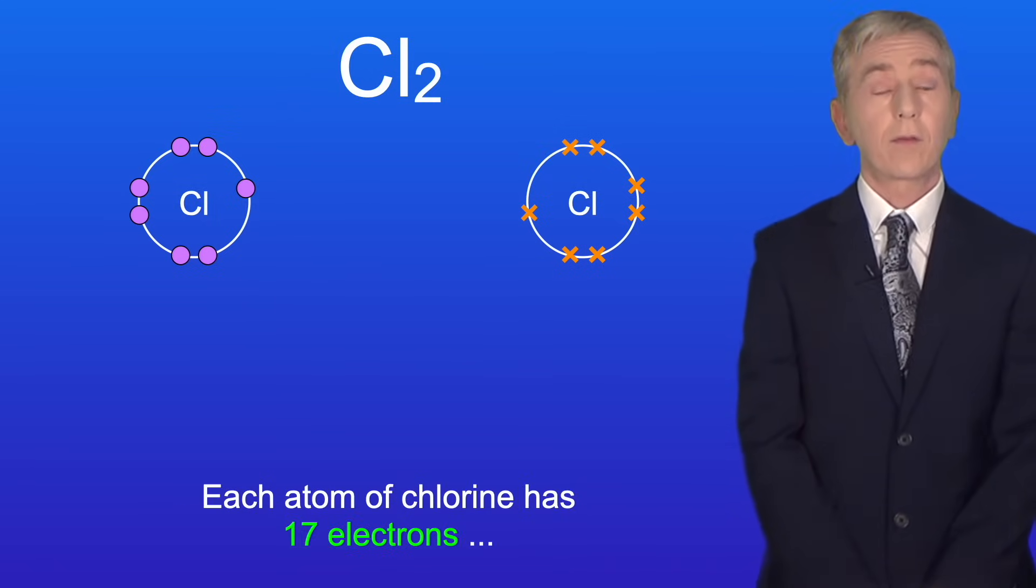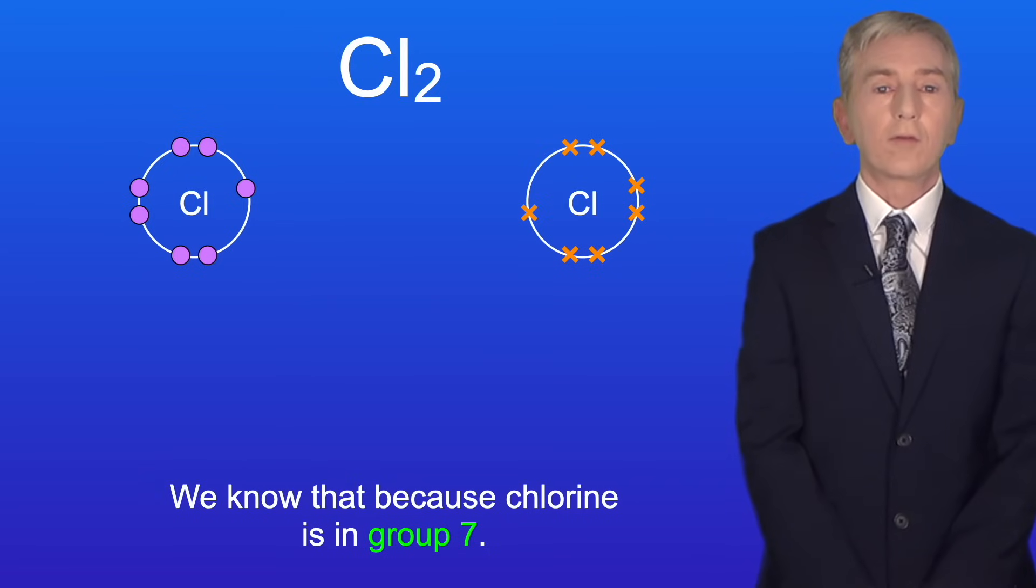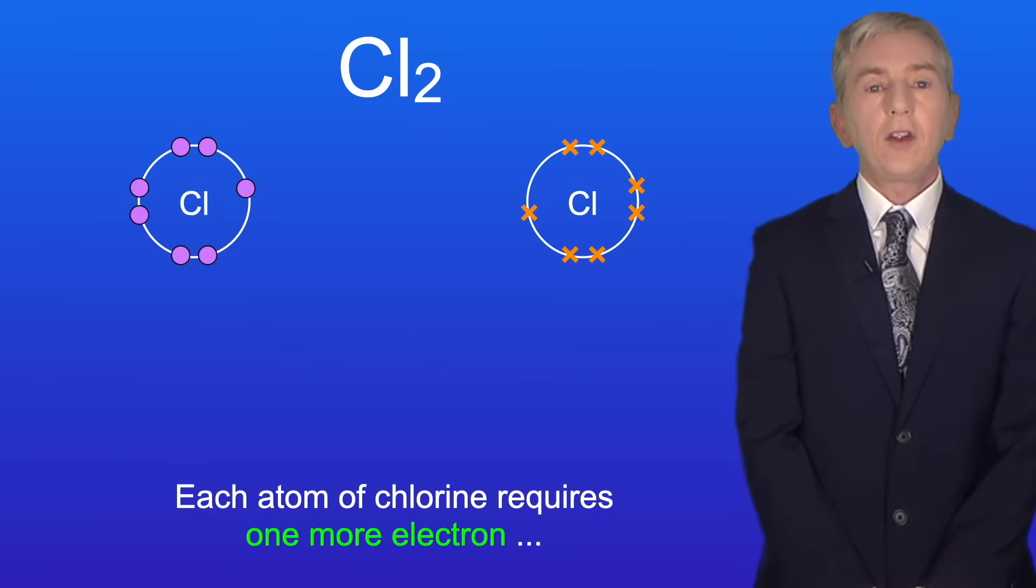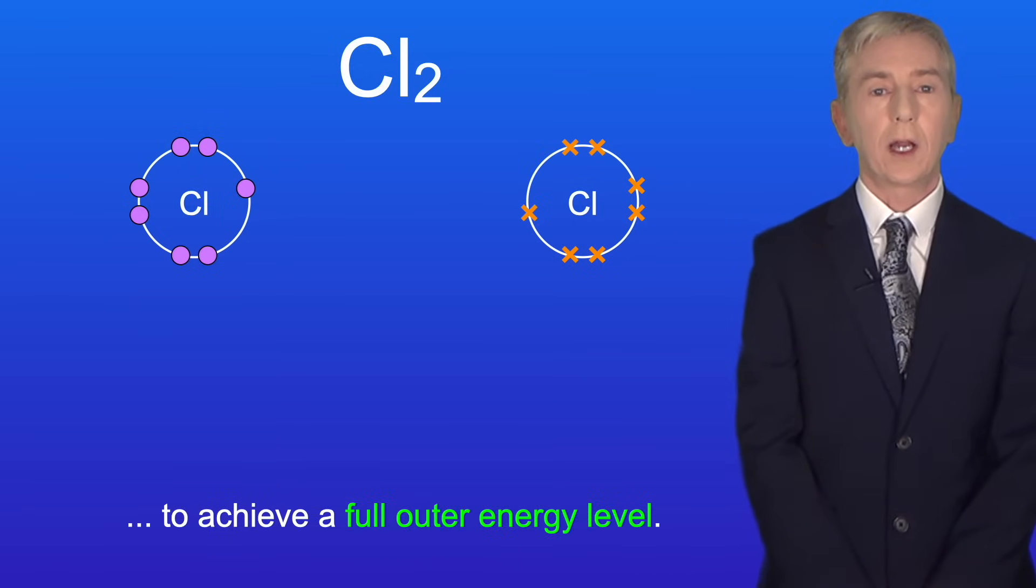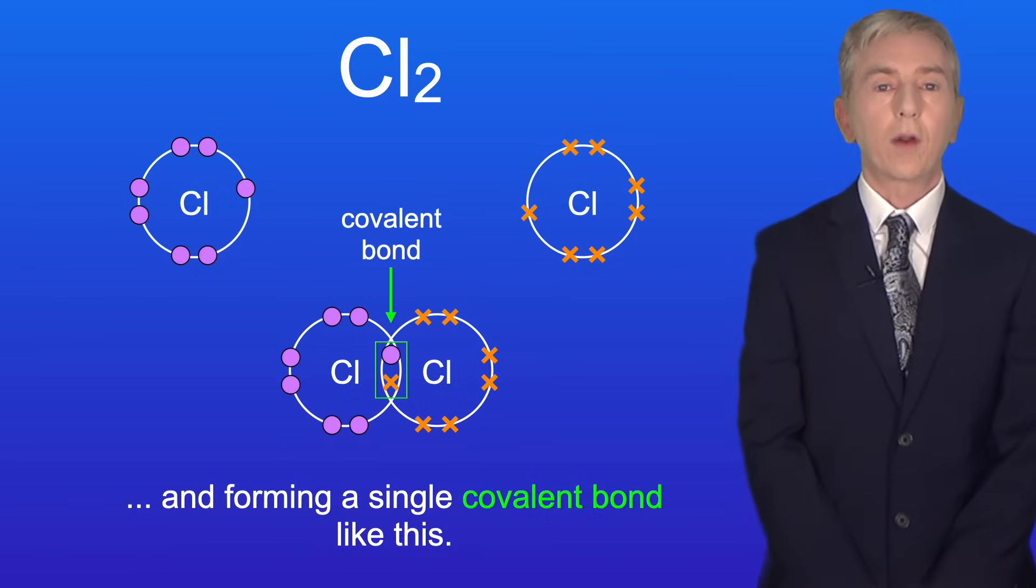Each atom of chlorine has 17 electrons, so it has 7 electrons in its outer energy level. And we know that because chlorine is in group 7. Each atom of chlorine requires one more electron to achieve a full outer energy level. They can do this by overlapping their outer energy levels and forming a single covalent bond like this.